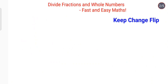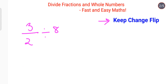Let's quickly look at a few more examples, and then we'll get into mixed fractions and what happens when the answer can be reduced. One more example: 3 upon 2 divided by 8. Using KCF, we keep the first fraction as it is — 3 upon 2.